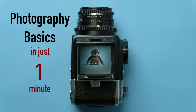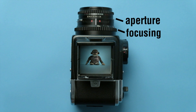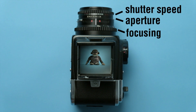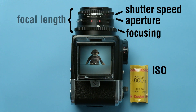This is an old film camera and there are only three possible settings: focusing, aperture, and shutter speed. Let's add two more parameters that also need to be taken into account: the film speed, ISO, and the focal length of the lens. That's all. To understand any camera you need to know only five parameters.